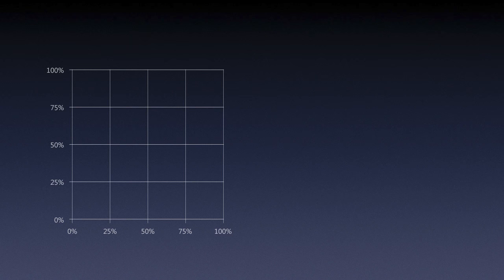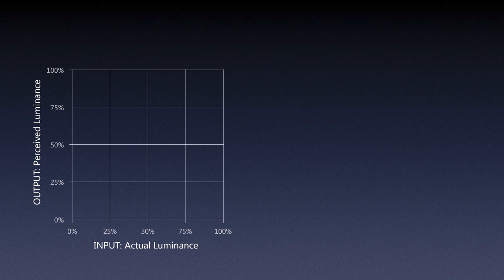Let's start with something familiar. This diagram has two axes: one for actual input luminance and one for output perceived luminance in percentages. This is something we saw when we talked about gamma or tone response curve in terms of calibrating your monitor.